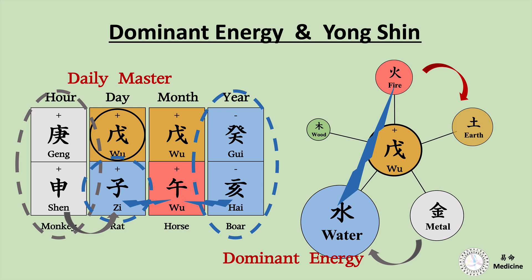So Yongshin would be fire and Earth. Some lineages say if someone was born in summer, the temperature of the chart always becomes hot. But commonly, there are cool days in summer, and sometimes it can be even cold in summertime. Therefore, this chart can be said a cold chart in summertime.